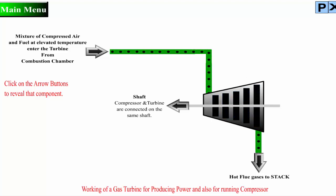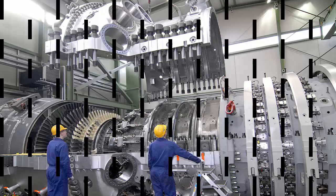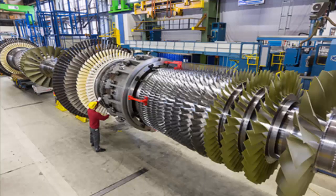Another way to boost efficiency is to install a recuperator or heat recovery steam generator (HRSG) to recover energy from the turbine exhaust. A recuperator captures waste heat in the turbine exhaust system to preheat the compressor discharge air before it enters the combustion chamber. An HRSG generates steam by capturing heat from the turbine exhaust. High-pressure steam from these boilers can be used to generate additional electric power with steam turbines, a configuration called a combined cycle. A simple cycle gas turbine can achieve energy conversion efficiencies ranging between 20 and 35%.